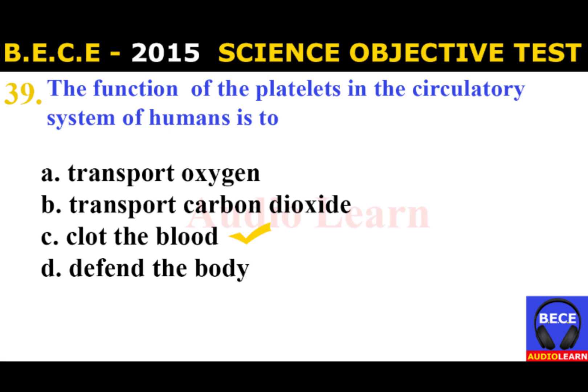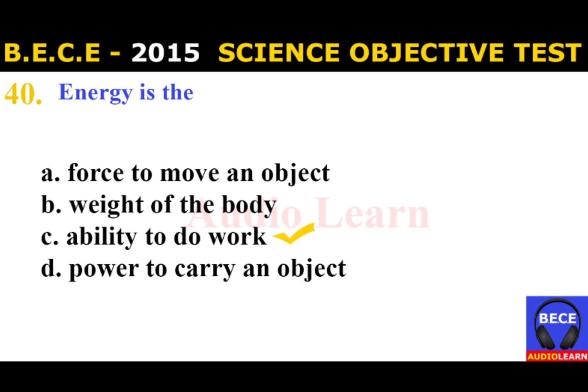Number 39: The function of the platelet in the circulatory system of humans is to A. Transport oxygen, B. Transport carbon dioxide, C. Clot the blood, D. Defend the body. The answer is C. Clot the blood. Number 40: Energy is the A. Force to move an object, B. Weight of the body, C. Ability to do work, D. Power to carry an object. The answer is C. Ability to do work.